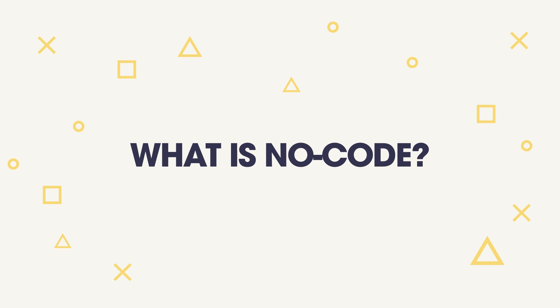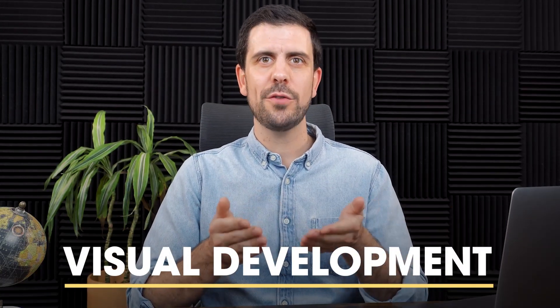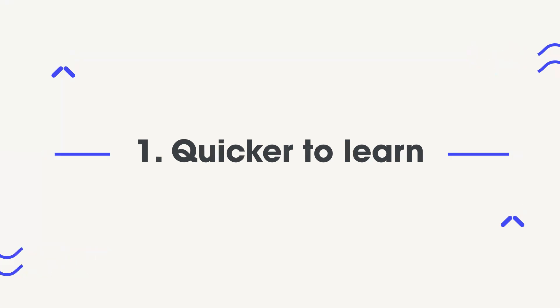Now that you know why we're building it, let's get into the fundamentals. NoCode is also known as visual development — it's a way for you to build software solutions like websites, apps, and web apps without writing a single line of code or understanding coding language. Some key benefits: it's way quicker to learn. You don't want to spend three years learning to code just to launch your product. With NoCode, the learning curve is between a couple of weeks and a couple of months, depending on the tool you choose.